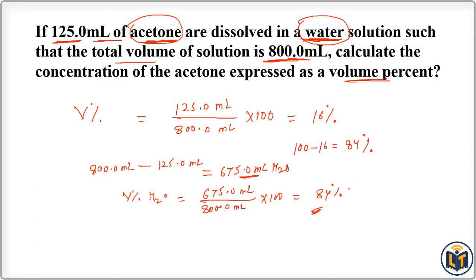As you can see, to calculate volume percentage of individual components, I divided the volume of the individual component by the total volume and multiplied by 100. Thank you.